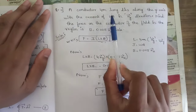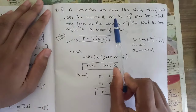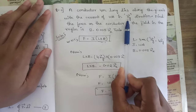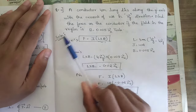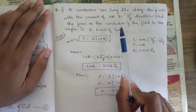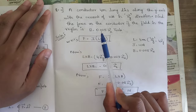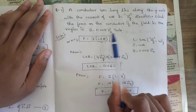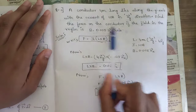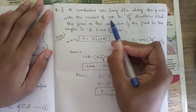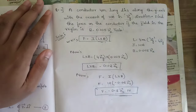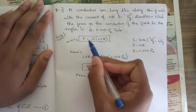The next question is a simple one from the model paper: a conductor four meters long lies along the y-axis with a current of 10 amperes in the ay direction. They have mentioned the direction as well. Find the force on the conductor if the field in the region is B equals 0.005 ax tesla. The magnetic field value, current value, and direction are all given.